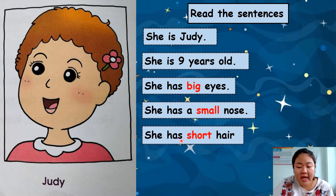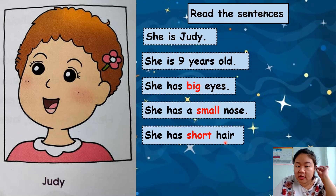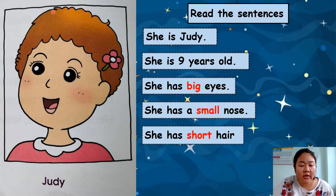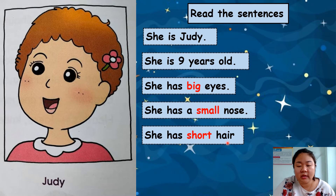Next: 'She has short hair.' Let's take a look at her hair — her hair is very short. ผมของ Judy นั้นสั้น (Judy's hair is short), so: 'She has short hair.'